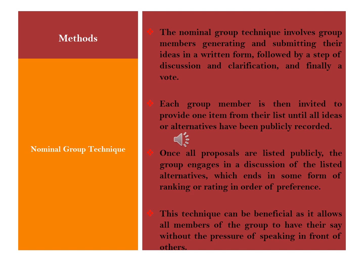The nominal group technique involves group members generating and submitting their ideas in a written form, followed by a step of discussion and clarification, and then finally a vote is taken. Each group member is invited to provide one item from their list until all ideas or alternatives have been publicly recorded. Once all proposals are listed publicly, the group engages in a discussion of the listed alternatives, which ends in some form of ranking or rating in order of preference. This technique is beneficial as it allows all members to have their say without the pressure of speaking in front of others.